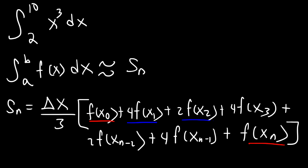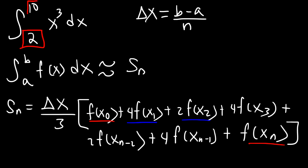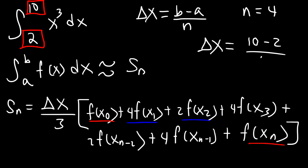First, let's calculate delta x. Delta x equals b minus a over n. In this example, a is 2 and b is 10, and we'll use four rectangles, so n is 4. Delta x is 10 minus 2 over 4, which is 8 divided by 4, equal to 2. Now let's create a number line.